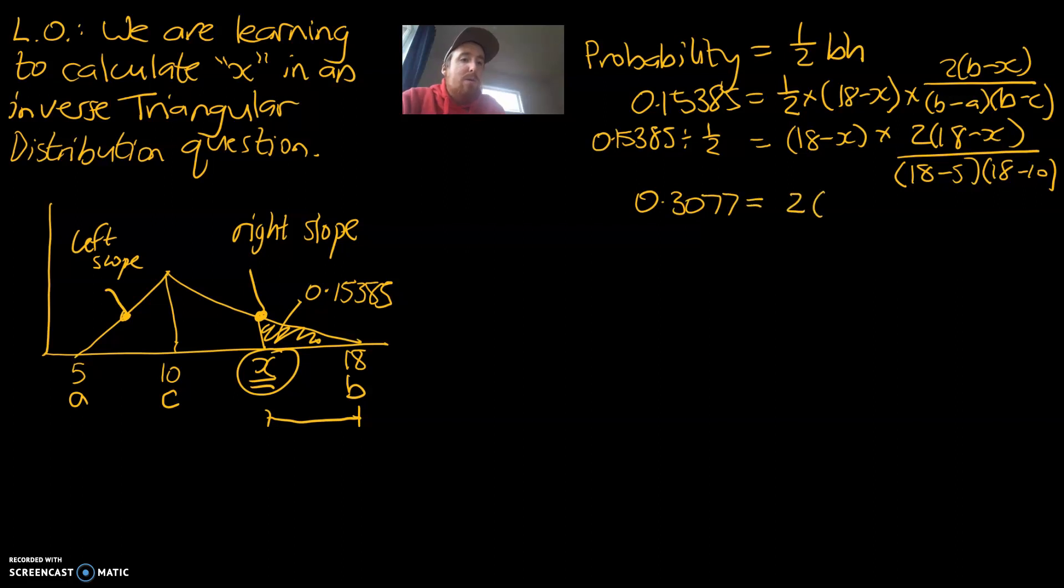That is going to be equal to 2 times 18 minus x, 18 minus x. What I've done is I've simplified that part there by grouping them together, because it's all multiplication. And that is going to be divided by 13 times 8. And the next step, let's simplify that bottom line. 0.3077 is equal to 2 times 18 minus x, 18 minus x, divided by 104.